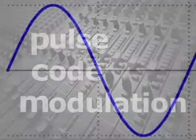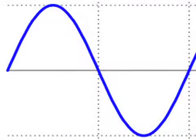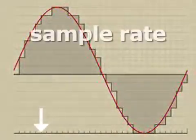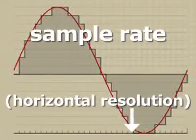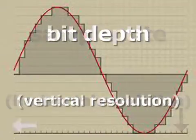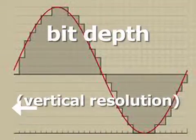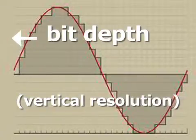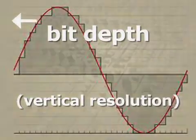Pulse Code Modulation is a sample-and-hold method to capture analog signals and convert them into digital signals. The sample rate, the horizontal resolution, is the sampling frequency used in the recording. The bit depth, the vertical resolution, is the number of quantized steps that capture the amplitude of that particular sample.